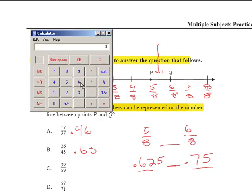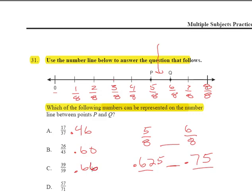So let's take a look at the next one and see if we can get it. 39, that's the numerator, divided by 59 gives me 0.661. I think we nailed it. 0.66 is in fact between 0.625 and 0.75 and that's why C is correct.